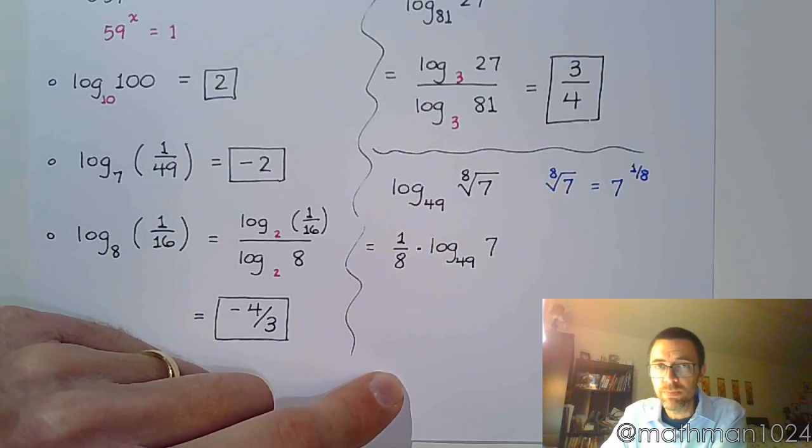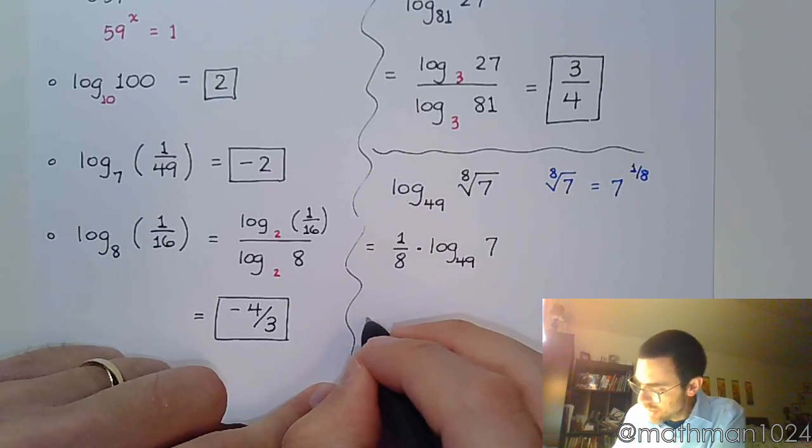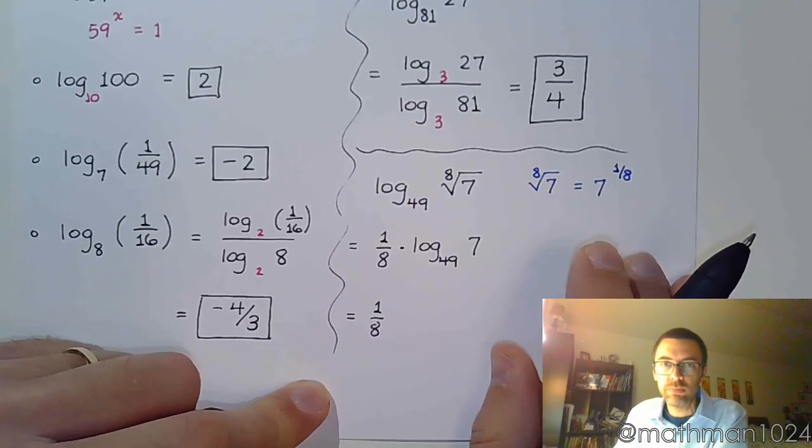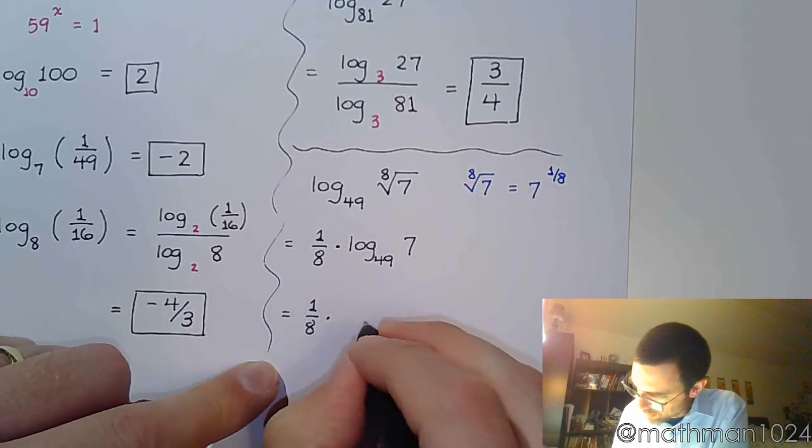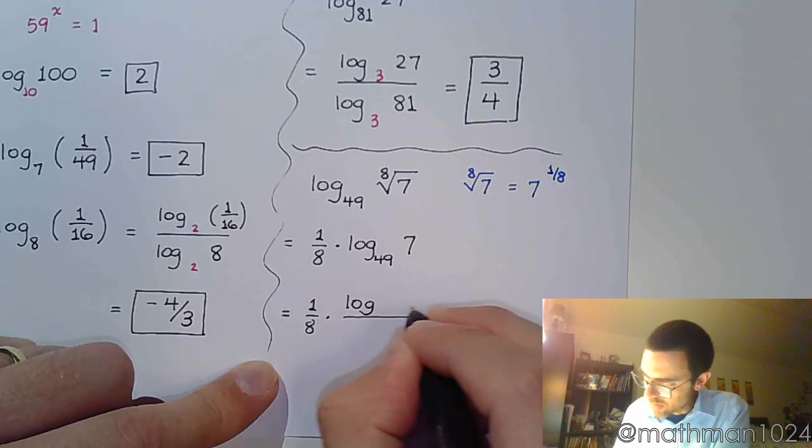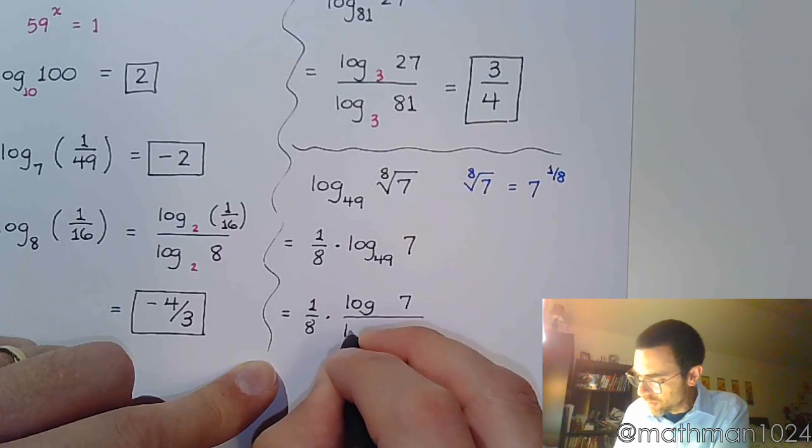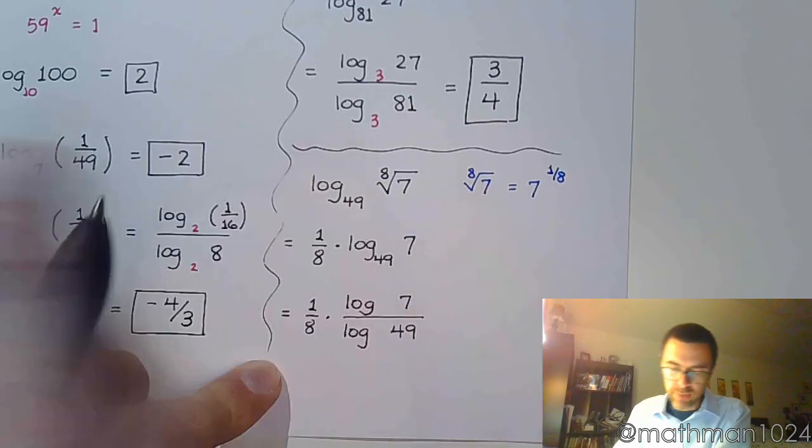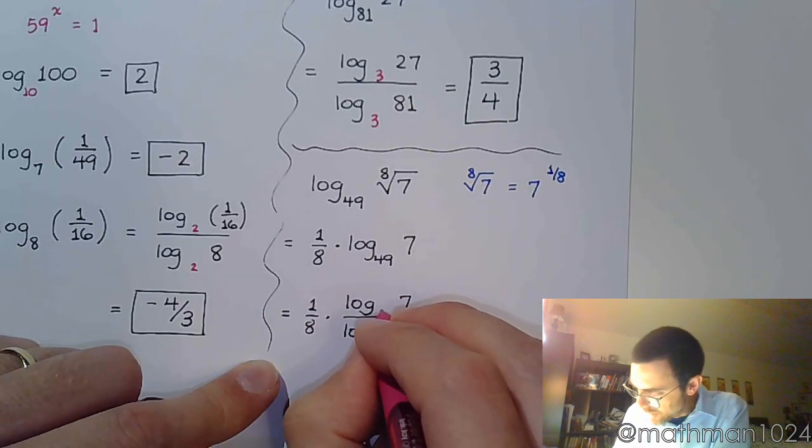And, we can recognize there's a common base between 49 and 7. And, use that change of base theorem. So, a big fraction. Log of 7 over log of 49. And, you've got that common base of 7.